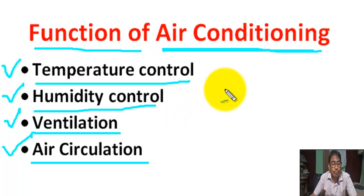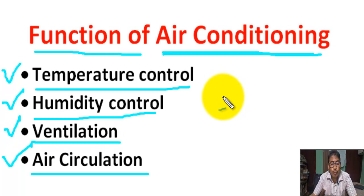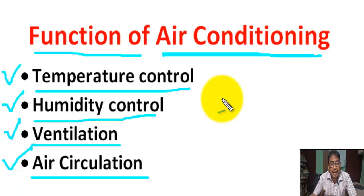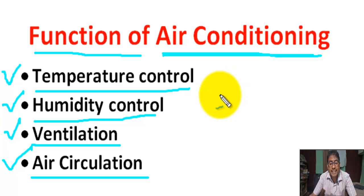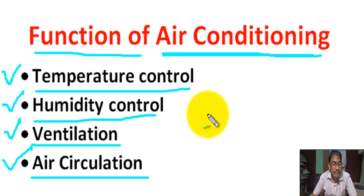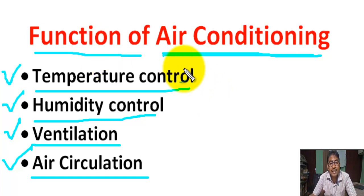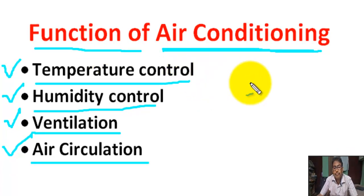The first function is to cool a specific area such as a room. The second function is to dehumidify — to remove moisture out of the air so you are not sitting in a cold, damp environment. The third function is filtering the air within the home.